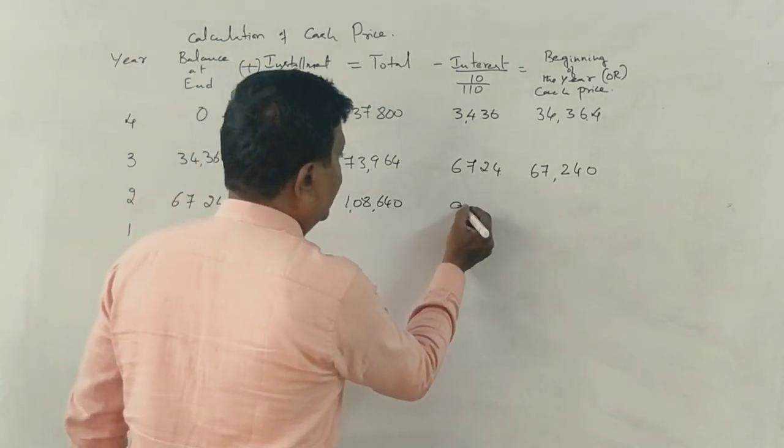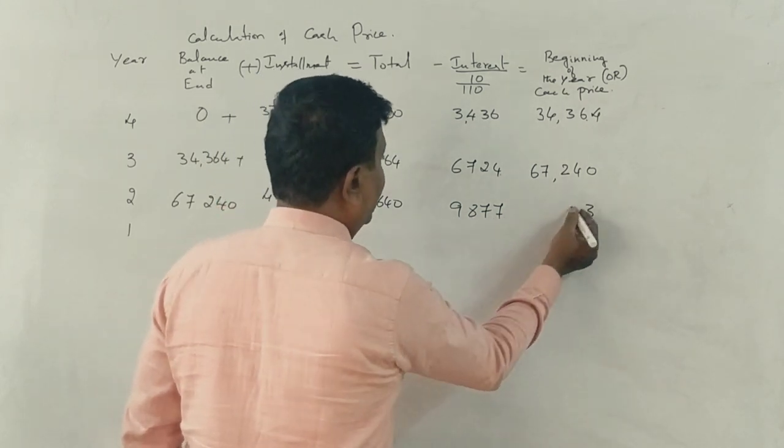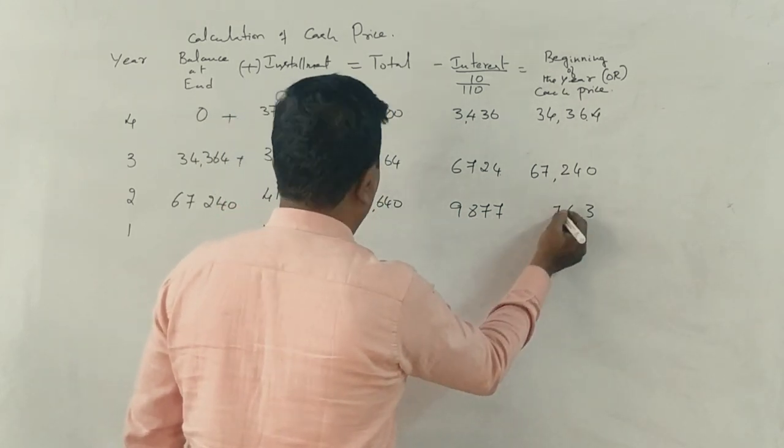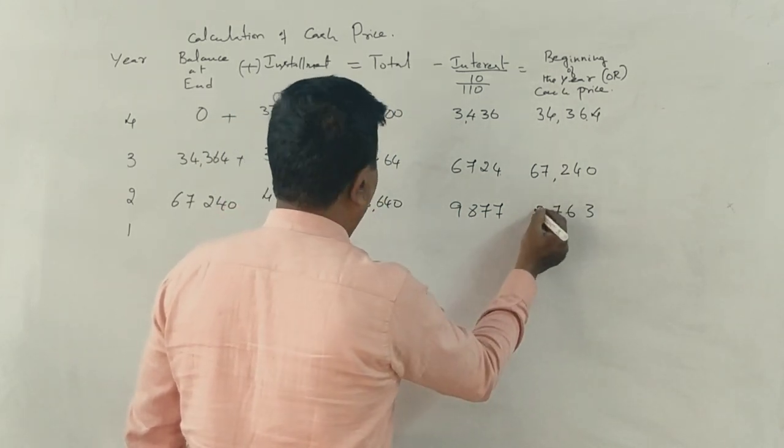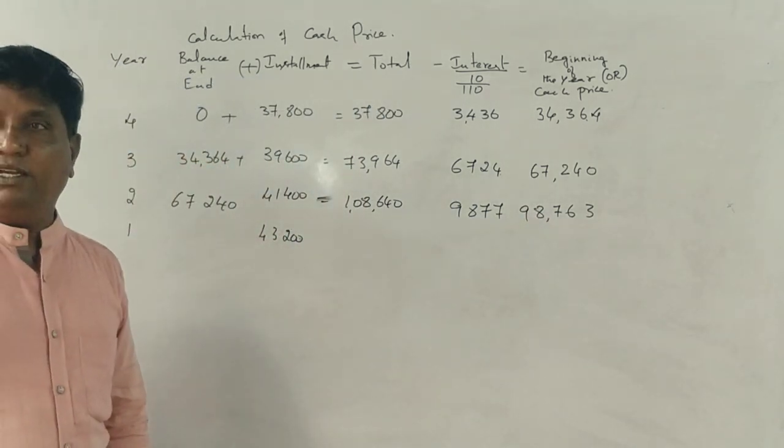67,240 plus 41,400 gives 108,640, minus calculation gives 98,764. Correct.